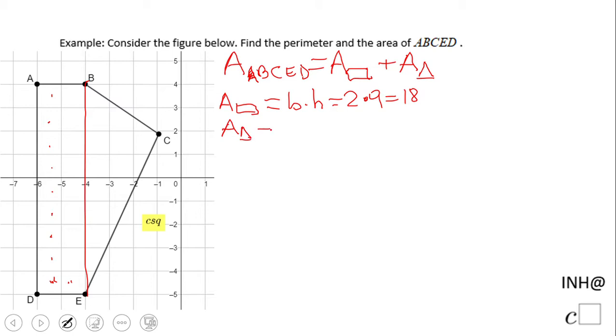The triangle will be one-half base times height. We have the same base of 9, and the height is 3. So it's one-half times 9 times 3, which is 27 over 2.